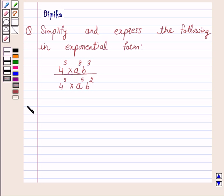So let's start the solution. Now we have to simplify 4 raised to power 5 times a raised to power 8, b cubed, over 4 raised to power 5 times a raised to power 5, b squared.